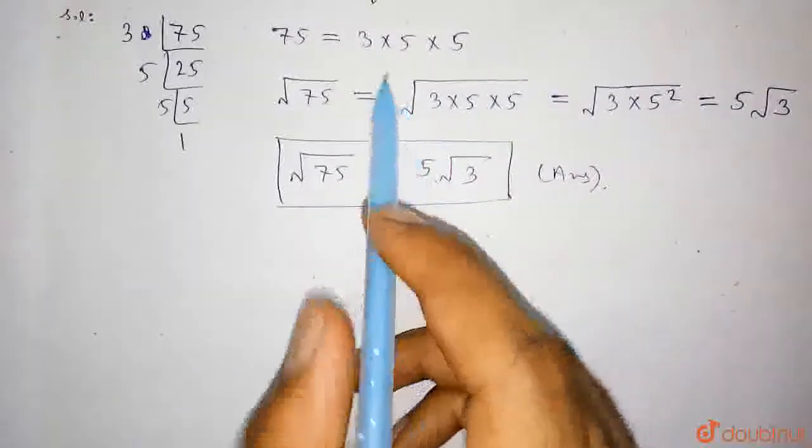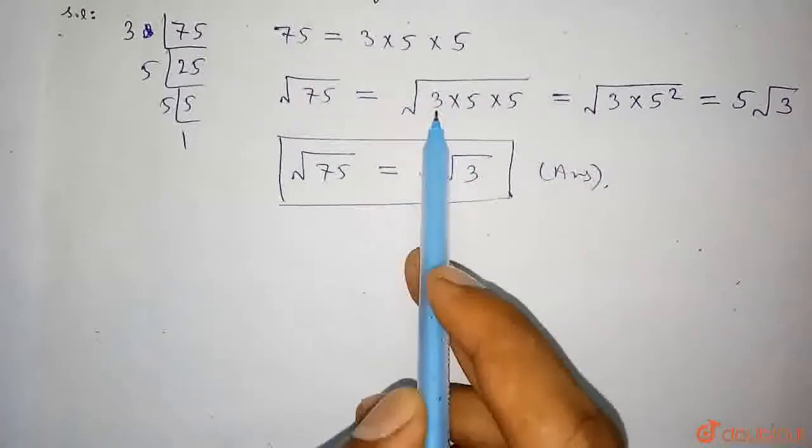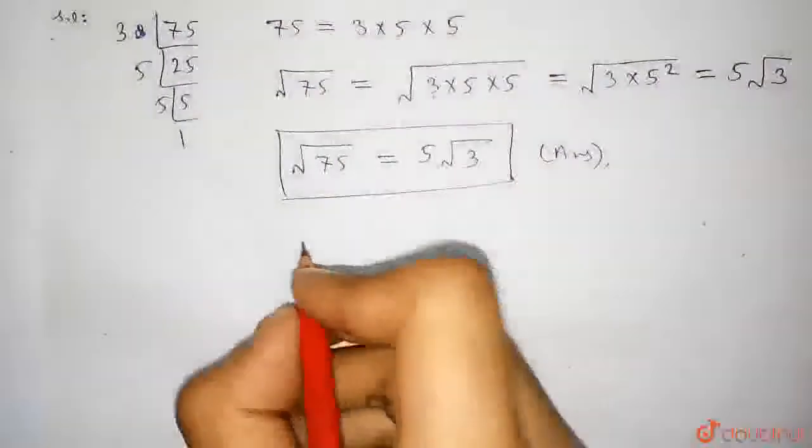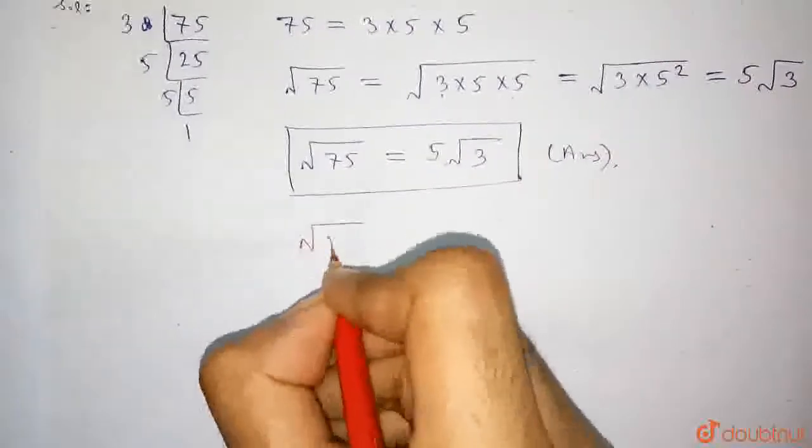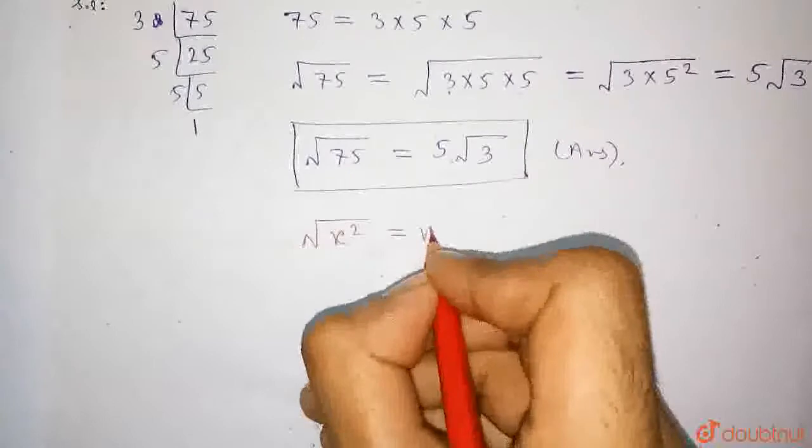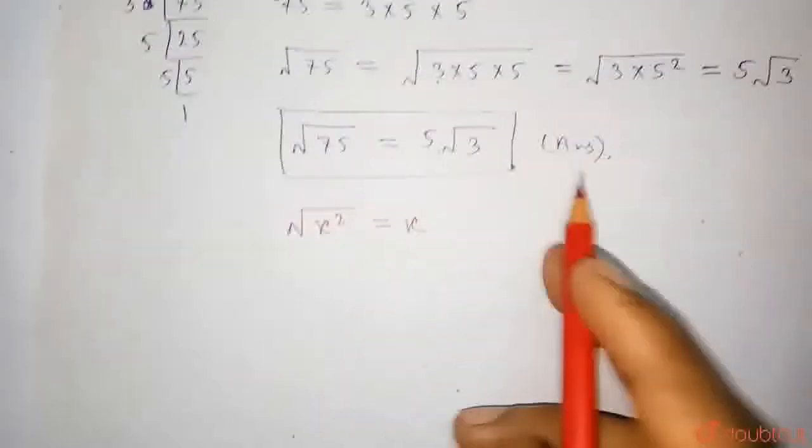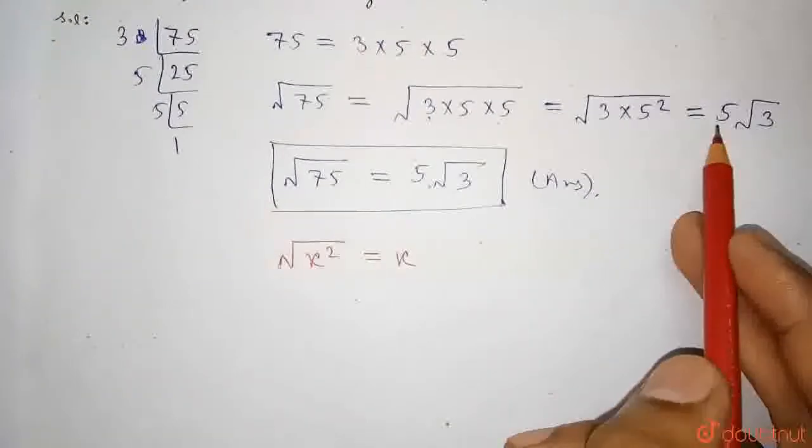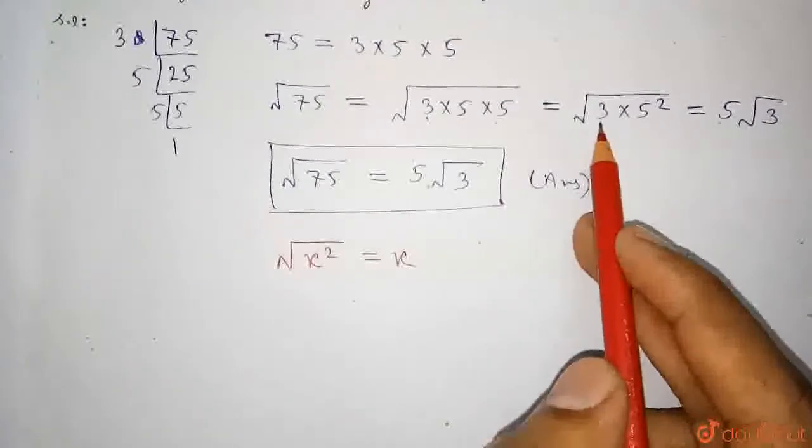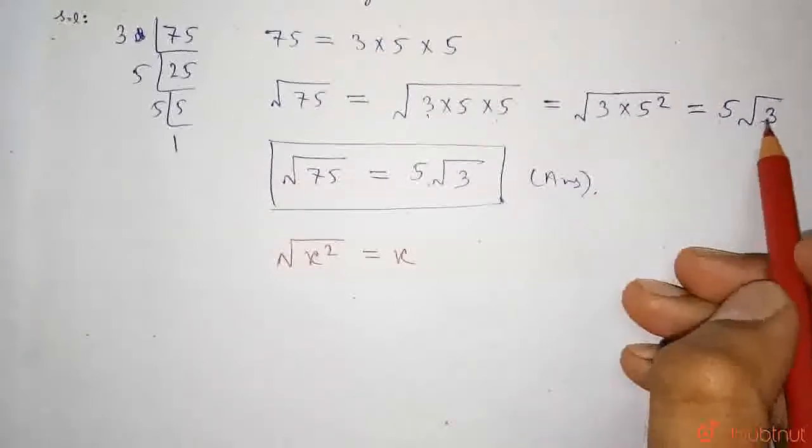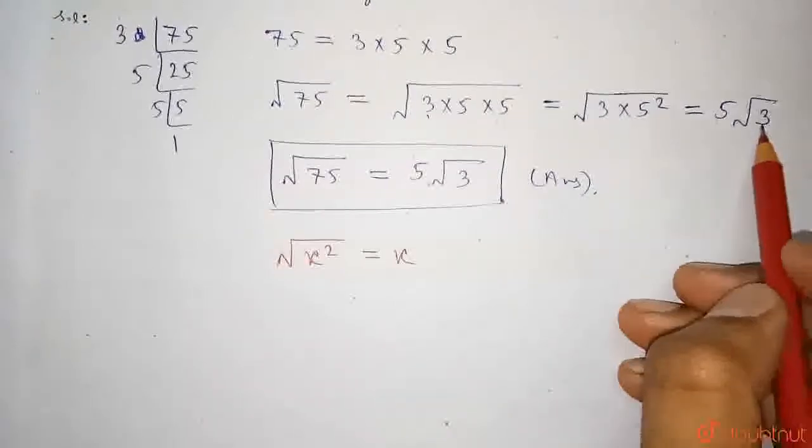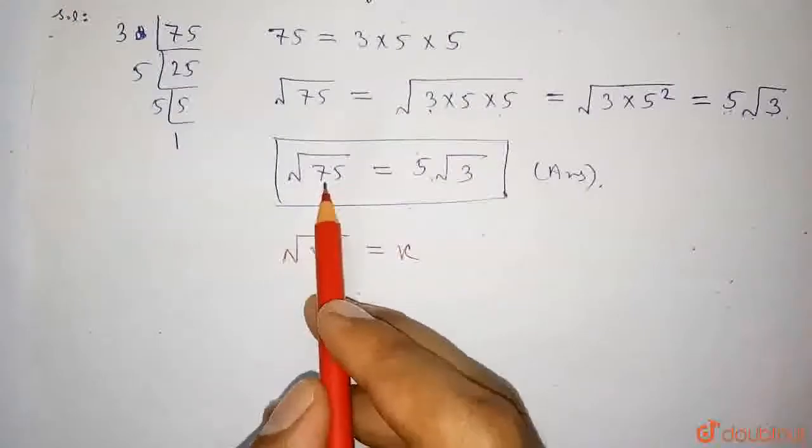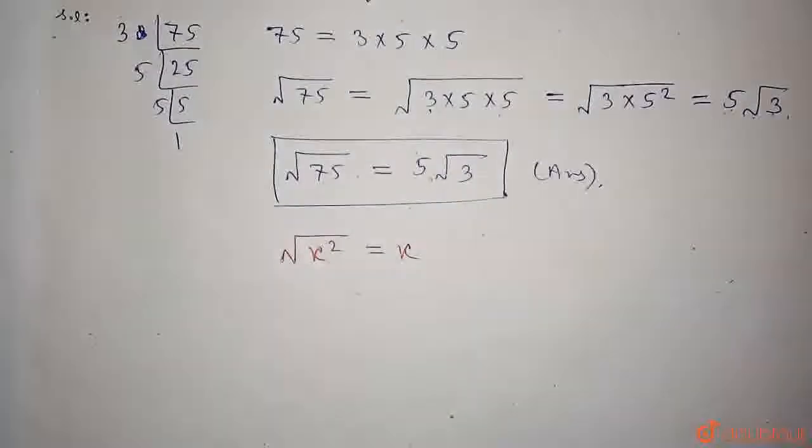Now, here what we did, we just factorized 75 and we wrote 3 into 5 into 5. And we know that under root x square is equals to x, and that's the reason we took 5 square outside the square root and the 3 which is left inside as it doesn't have a pair, so it is left inside. So, it comes out to be 5 into root 3. So, the value of root 75 equals 5 root 3 which is the correct answer.